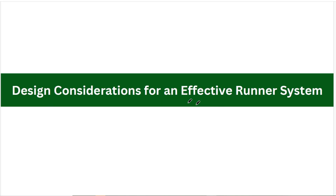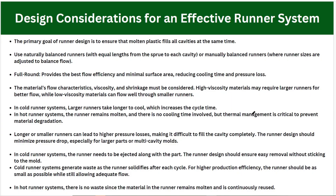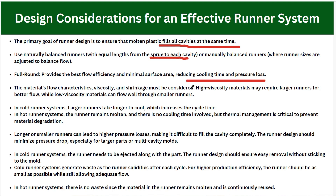Now let's discuss the design considerations for the effective runner system. The primary goal of the runner is to ensure that molten plastic fills all cavities at the same time. Use a natural balance runner with equal length from the sprue to each cavity, or use a manual balance runner where runner sizes are adjusted to balance flow. A full round cross-section provides the best flow efficiency, minimizes surface area, and reduces cooling time and pressure loss.